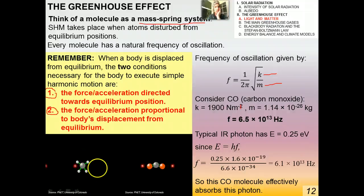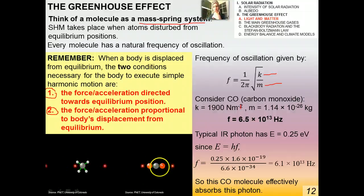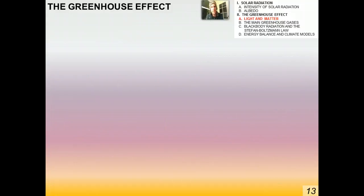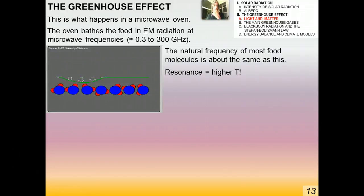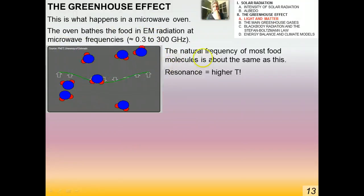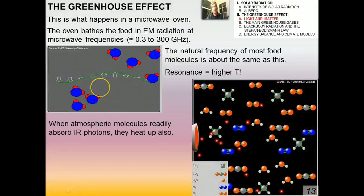These GIFs show methane absorbing a photon, jiggling and getting hotter, then emitting more photons in the infrared part of the spectrum — that's why they're shown in red. This is also a CO2 molecule. Both methane and CO2 can very readily absorb photons in the infrared part of the spectrum, which is crucially important for the greenhouse effect. This is also what happens in a microwave oven — the oven bathes food in electromagnetic radiation at microwave frequencies. The natural frequency of most food molecules is about the same, so resonance occurs within those molecules and the temperature goes up.